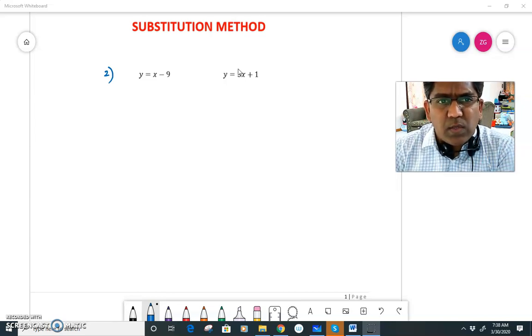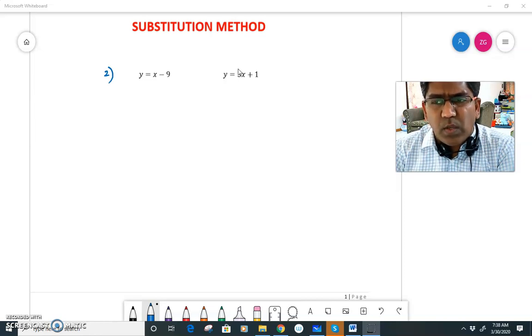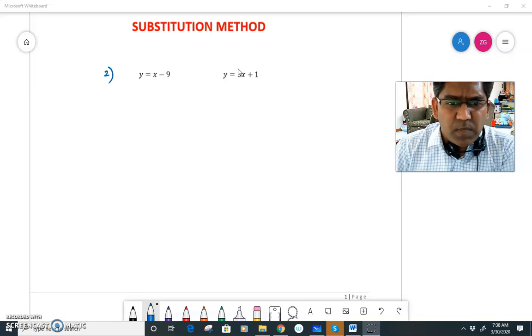Now it is my choice either to substitute the value of y from the first equation into the second, or I'll substitute the value of y, 3x plus 1, from the second equation to the first. So suppose I am doing the first one. I'll substitute the value of y, x minus 9, from the first equation into the second equation.